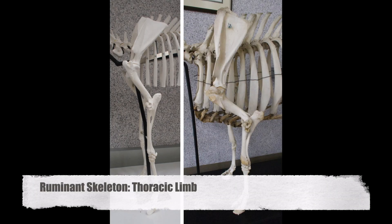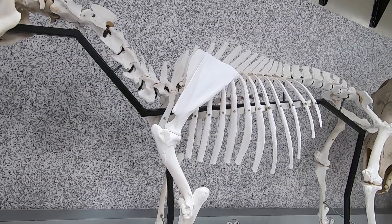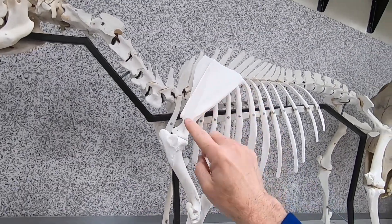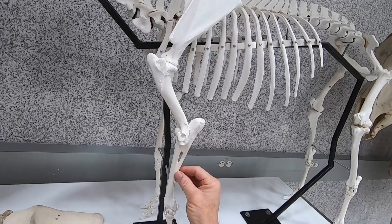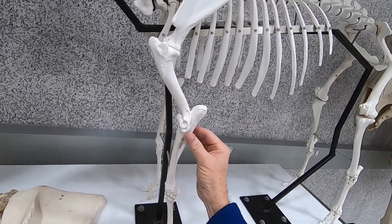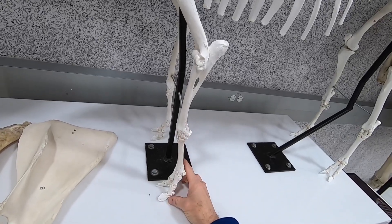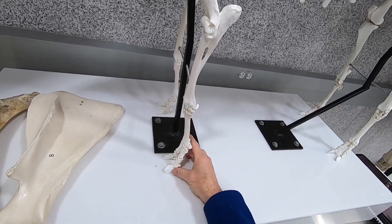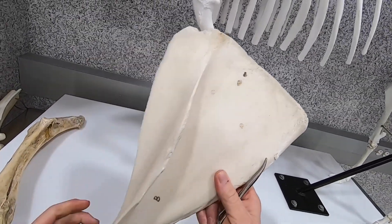In this video we're going to look at the skeleton of the thoracic limb of the ruminant. Looking at a goat, we have the scapula, the humerus, the fused radius and ulna, and the manus consisting of the carpus, the metacarpus, and the digits.